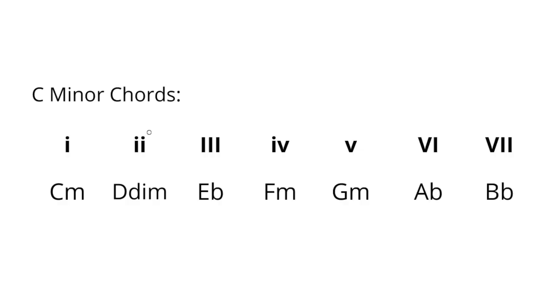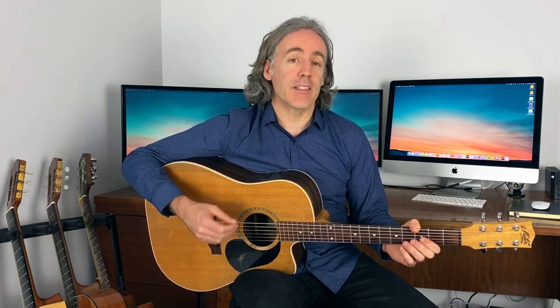In the key of C minor, which is parallel to C major, the four chord is F minor. We can borrow that chord and put it into the key of C major — it's a very cool sound when used in certain ways. We call it the minor four chord because it's exactly that: the four chord, and it's minor. Normally in C major the four chord is F major. So let's just hear a little vamp — C, the one chord, to the four minor chord.